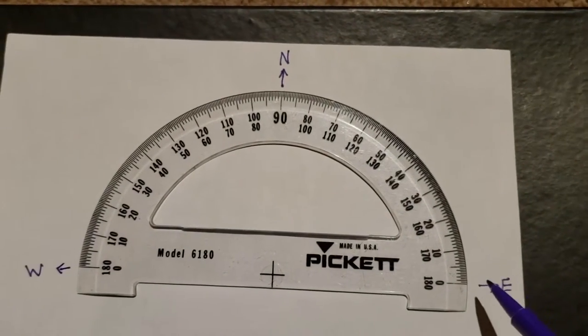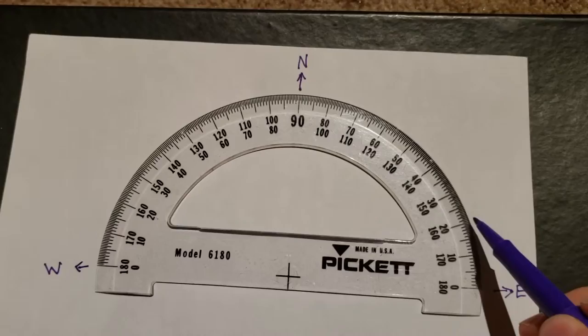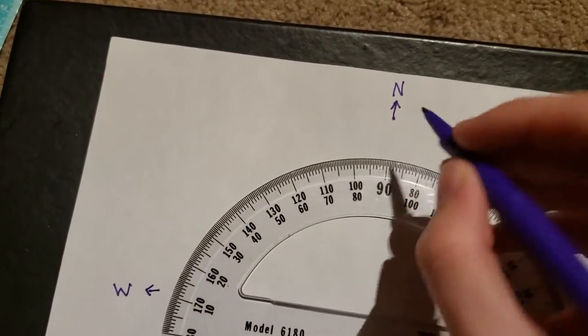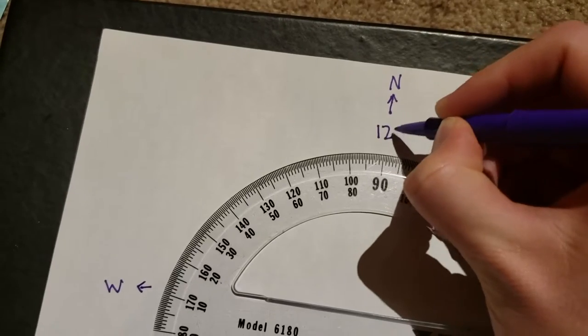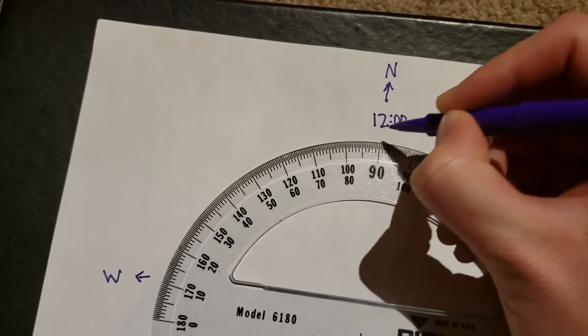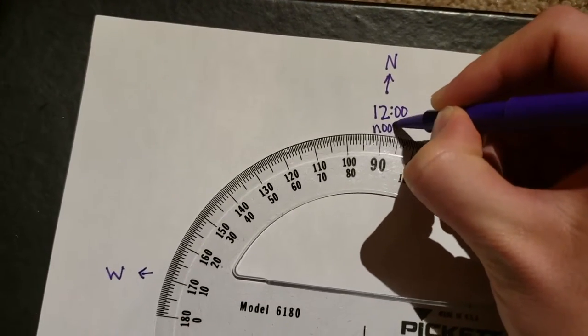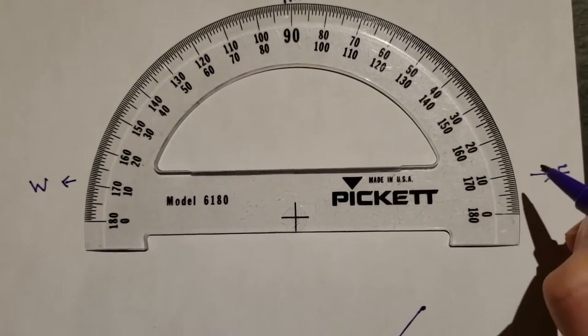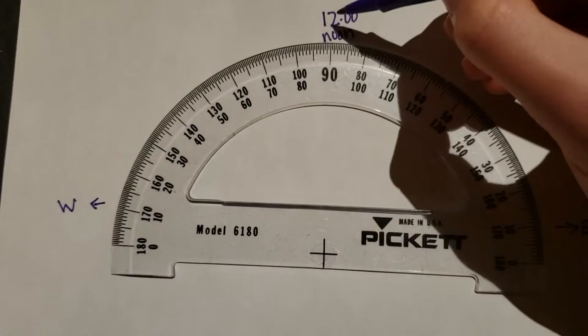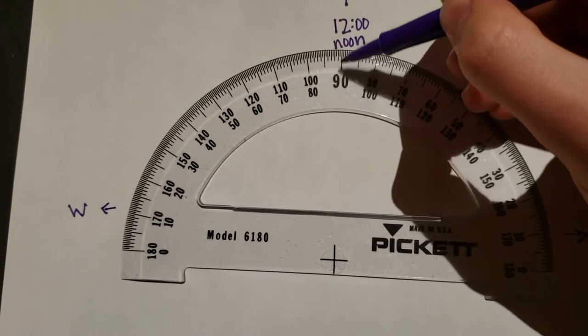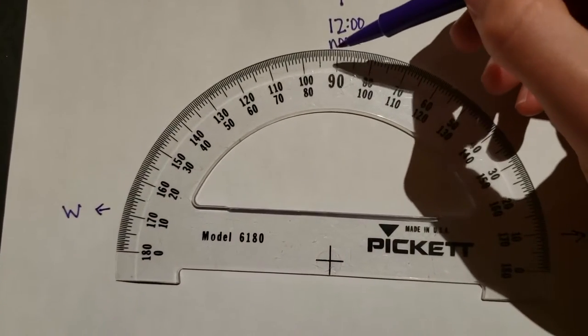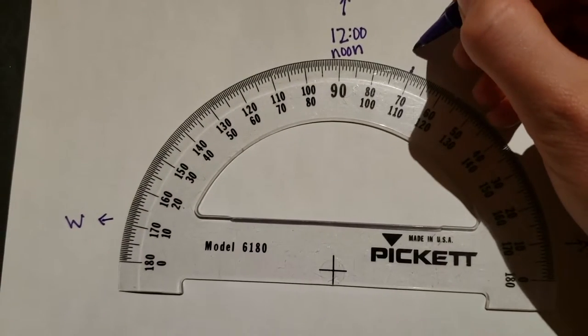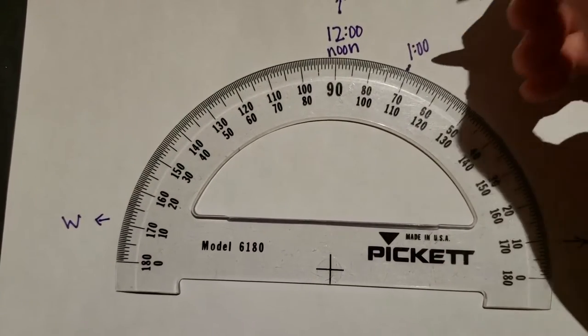Then, what they would do is they would measure out where they want to put all the numbers between 12 o'clock or noon. And really, whatever they want to do. So they can just go from this point, they're 90 degrees, and measure, let's say, 20 degrees. And so, right here, they'll put 1 o'clock in the afternoon.